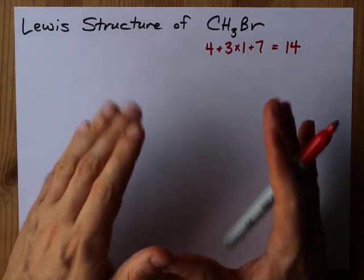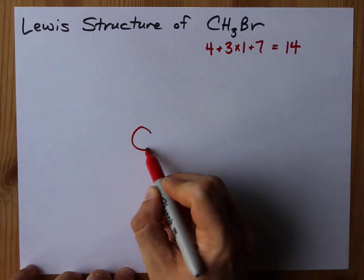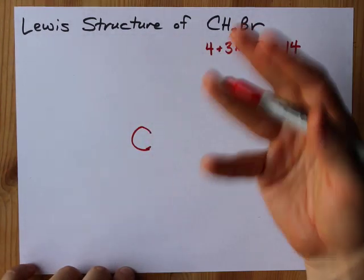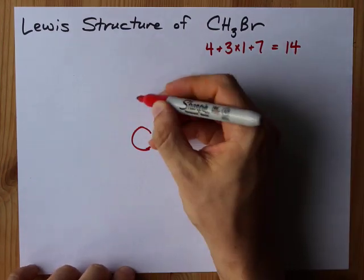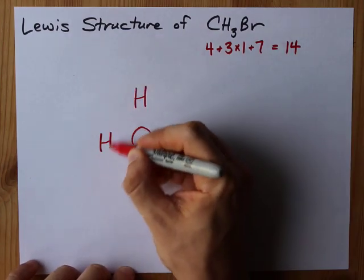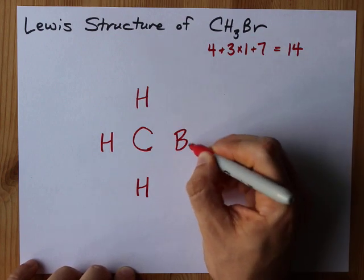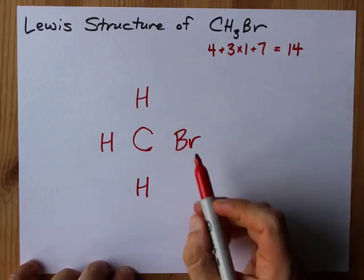Alright, we know what we're working with. I like putting the element that can make the most bonds in the center, that's carbon. Carbon can have up to 4 bonds. So I'm going to put it in the center, surround it with my H's. Oh, and the Br. I'd be a fool to forget that. That's what makes it bromomethane.